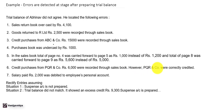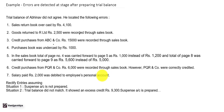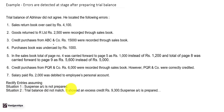However, PQR and Company were correctly credited. Error 7: Salary paid Rs. 2,000 was debited to employee's personal account. Rectify entries assuming Situation 1 — suspense account is not prepared — and Situation 2 — trial balance did not match.